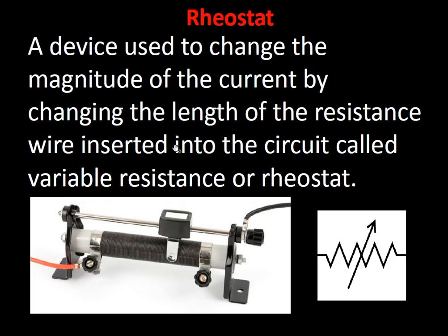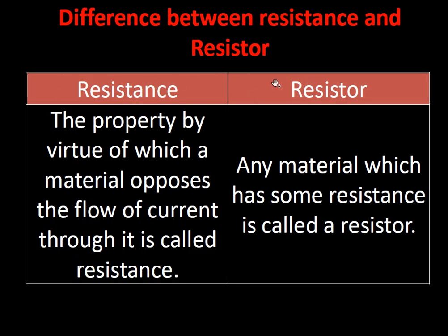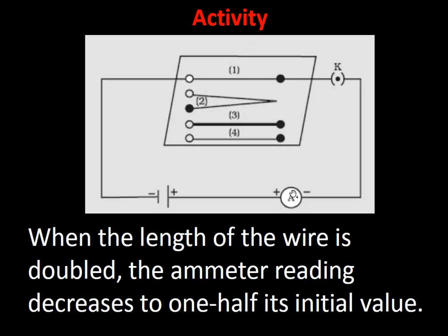A rheostat is a variable resistance. Its symbol is a resistor with an arrow mark, used in laboratories to increase or decrease the resistance — and hence to change the magnitude of current in a circuit. Increasing the resistance decreases the current and vice versa. It is also called a variable resistance. Note: resistance is a property, while a resistor is a physical component (material) that has resistance in it.